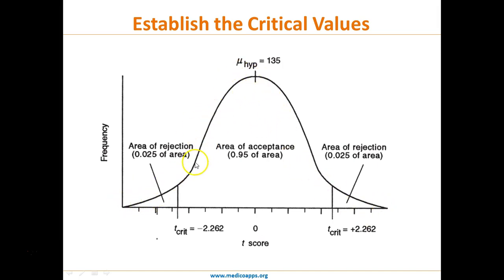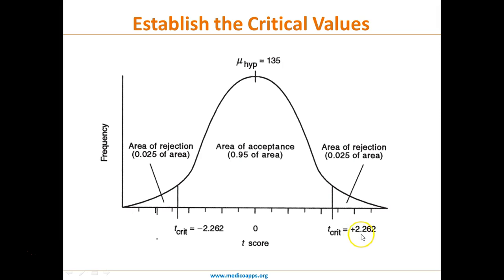Diagrammatically, on the normal distribution curve, the hypothesized mean of 135 sits at the center. The 95% area is the area of acceptance, and the two tails — each 2.5% — are the areas of rejection. The t-critical values are minus 2.262 and plus 2.262. Any calculated t-value between these will fall in the acceptance region; any value outside will be rejected.